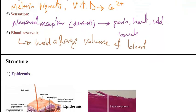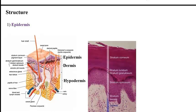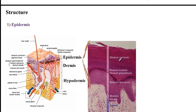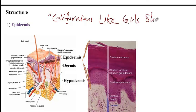Next we'll discuss different structures of the skin, starting from the superficial layer called the epidermis, then moving to the deeper layers called the dermis and hypodermis. The epidermis is divided into five layers, and a helpful memory aid is 'Californians like girls in short bikinis.'